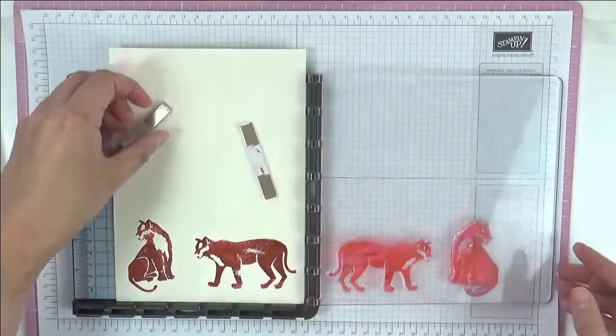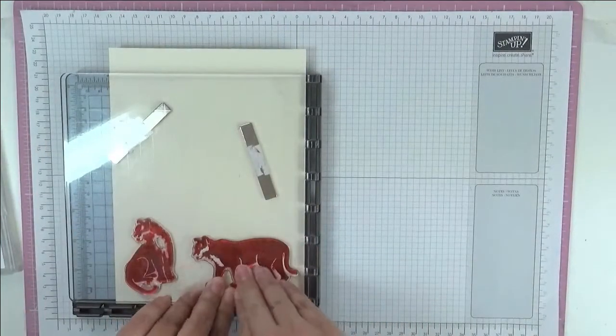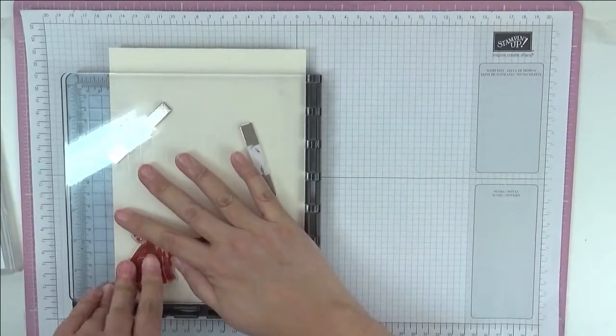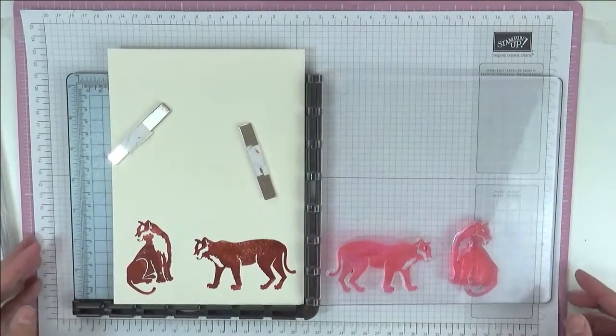Just press down and there we have our tigers. Now I'm just going to re-stamp. There's quite a bit of ink on my stamp still. Give it a better press down. There we go. There are our tigers.